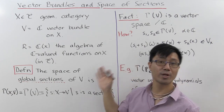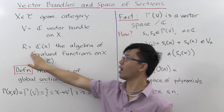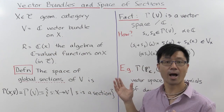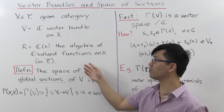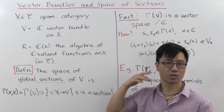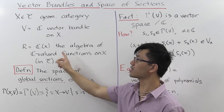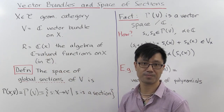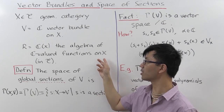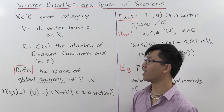We want to relate this to modules over a ring. So what's that ring? The ring R will be what I denote by C(X) — that's going to be the algebra of complex valued functions on X inside my category C. So if you're looking at the category of topological spaces, these are just continuous complex valued functions on X. If you're looking in the category of complex manifolds, this is just the algebra of holomorphic functions on X.